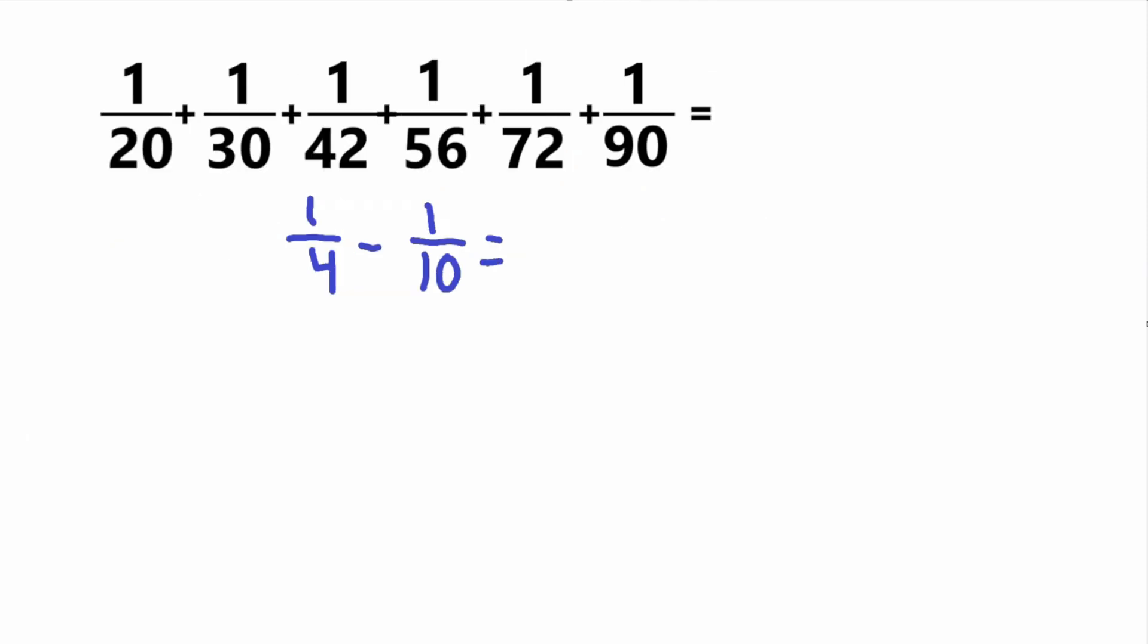So now we got our problem, this big problem, down to 1 fourth minus 1 tenth, and this is simple to do. So how do we subtract fractions? What we need to do is find the common denominator. I'll let you guys think a little, so 4 and 10 are both factors of 20, right? So the common denominator here will just be 20.